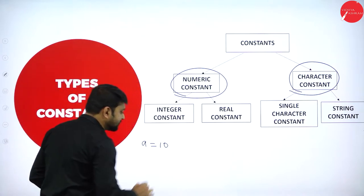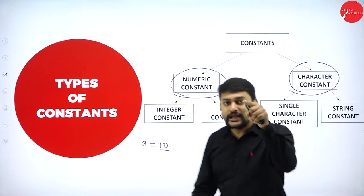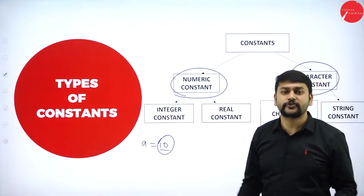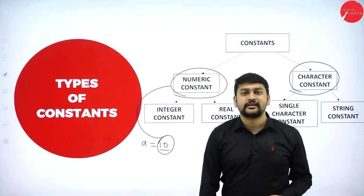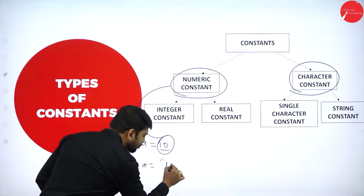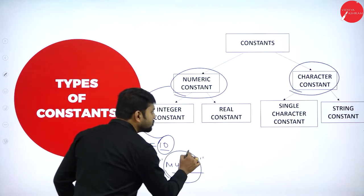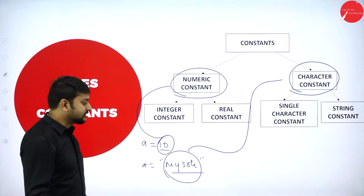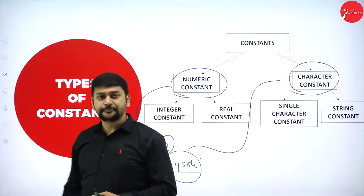For example, if I write a = 10, you will tell me 10 is the value — and this is what I will call a constant. When it comes to this, I have different types. If I write 10, this 10 is a numeric constant. Suppose I write a = 'Mysore' — you can understand that 'Mysore' is a character constant, because I have a group of characters. A constant is a value which remains as it is throughout the execution of the program.